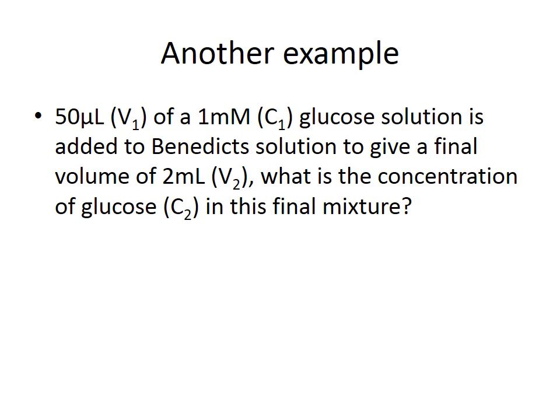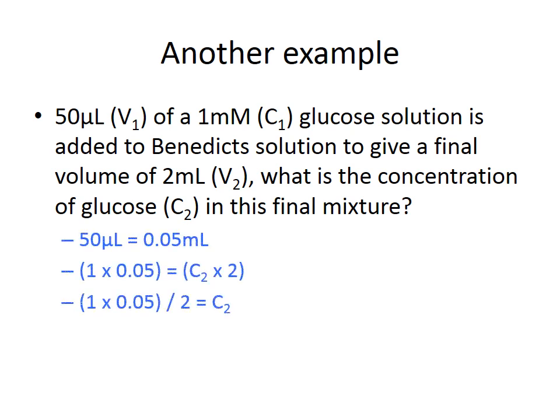This second example is slightly more complicated because the volumes involved are not equivalent. 50 microlitres of a 1 millimolar glucose solution is added to Benedict's solution to give a final volume of 2 millilitres. First, convert 50 microlitres to 0.05 millilitres by dividing by 1000. Applying C1V1 = C2V2: 1 millimolar × 0.05 mL = C2 × 2 mL. Dividing both sides by 2 gives C2 = 0.025 millimolar, equivalent to 25 micromolar.